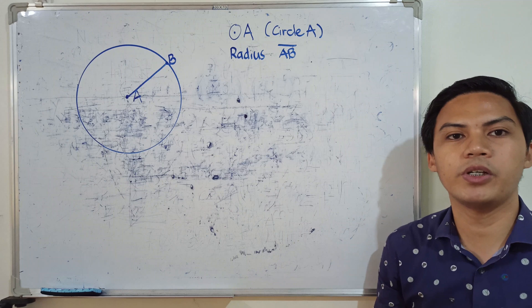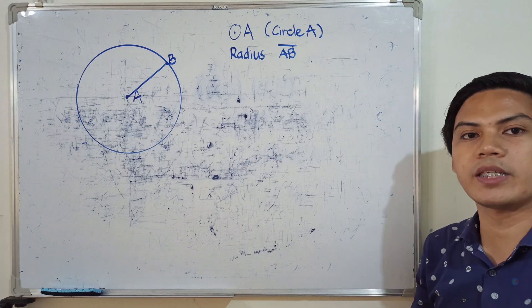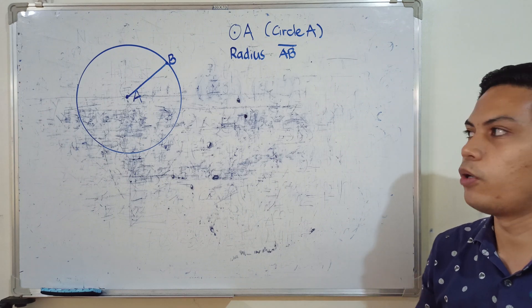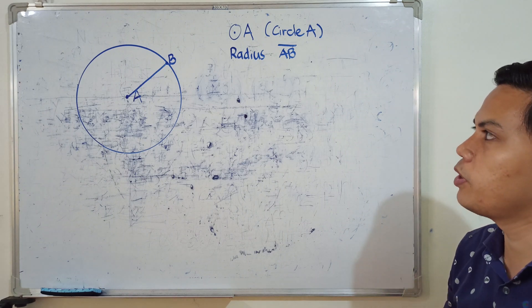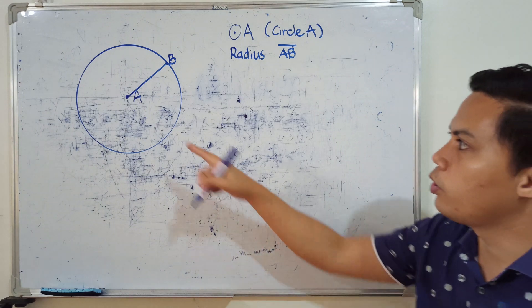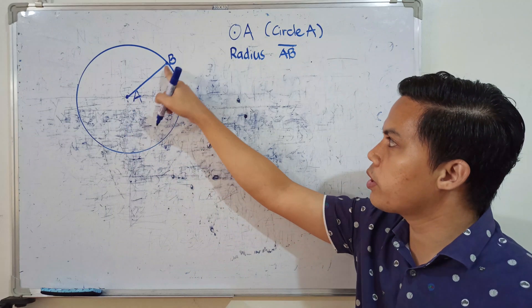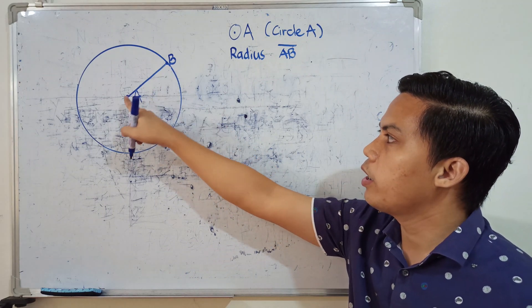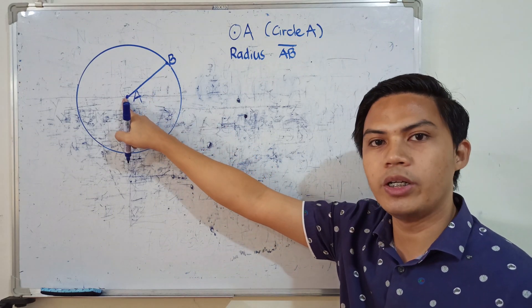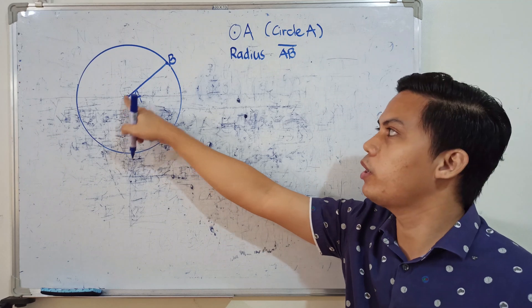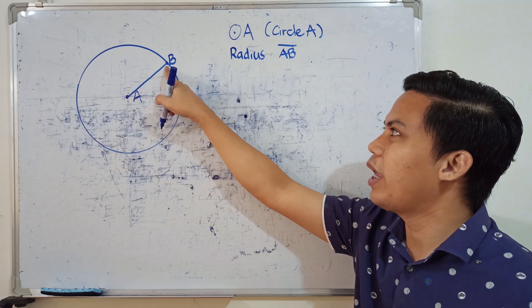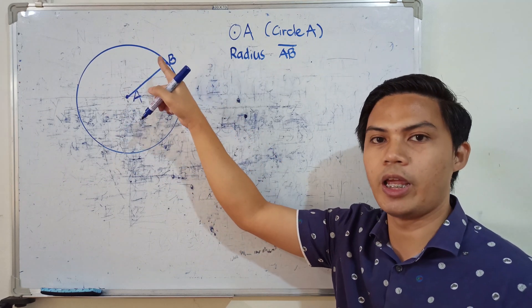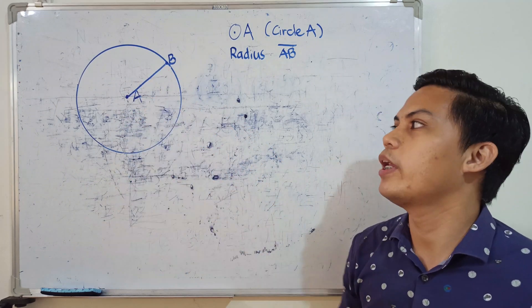We can also write it as line segment BA. As we notice, the endpoints of the radius are the center and any point on the circle.